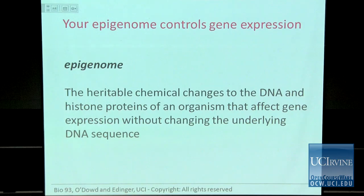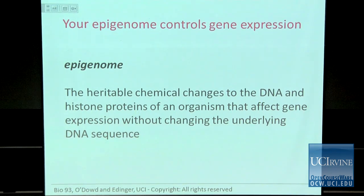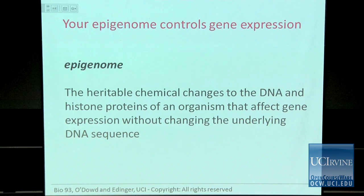We also have to cover a couple of slides from the end of lecture 18. There's no definition of 'epigenome' in the glossary of your textbook, so I decided to give you one. This is a synthesis of several definitions from other textbooks and the web. 'Epi' means above, and the epigenome is above the genome. It is the heritable chemical changes to the DNA nucleotides and the histone proteins of an organism that affect gene expression without changing the underlying DNA sequence.